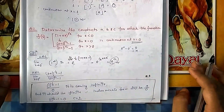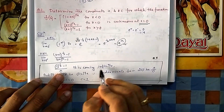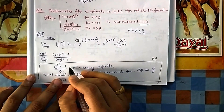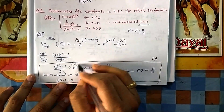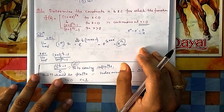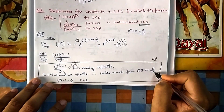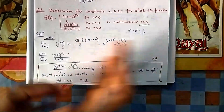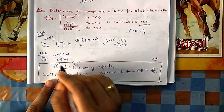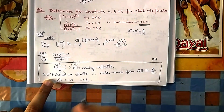For the right-hand limit (0+), substituting x = 0 gives (c + 1 − something)/0, which is infinite. For the limit to exist and be finite, we need a 0/0 indeterminate form. This means the numerator must also be 0 at x = 0, which requires c + 1 − 1 = 0, so c must equal 1. Only then can we apply L'Hôpital's rule.